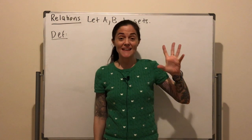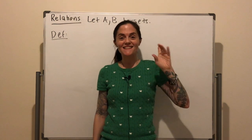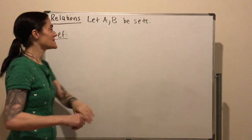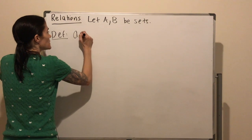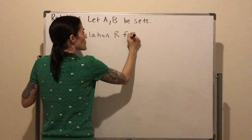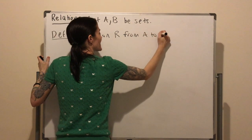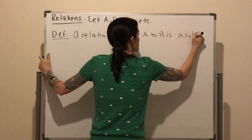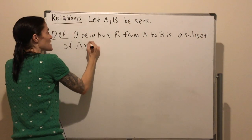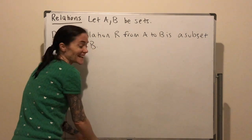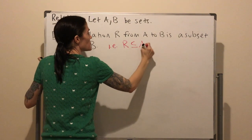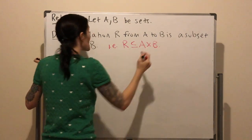In this lesson, we begin studying relations. The best way to start is with the definition. We let A and B be sets, and then a relation R from A to B is a subset of the Cartesian product A cross B. In other words, R is a subset of A cross B. This is what a relation is.